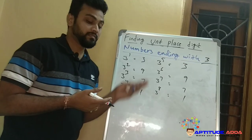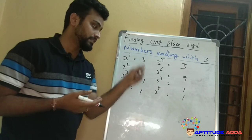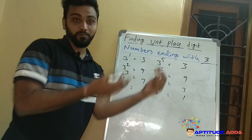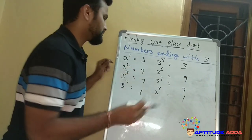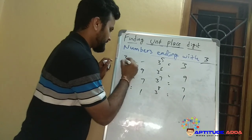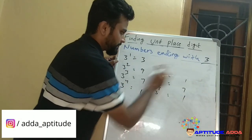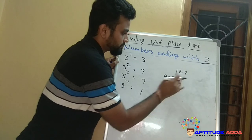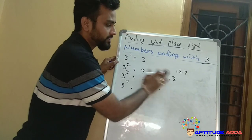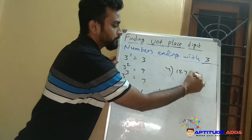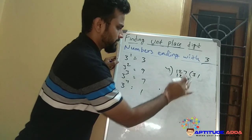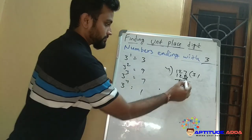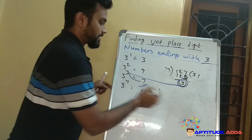Similarly, for numbers ending with 3, the units digit cycle is 3, 9, 7, 1 — repeating every four powers. So I divide the power by 4 and use the remainder. For example, 923^(41127): divide the power 41127 by 4 — 4 × 10281 = 41124, remainder 3. Since remainder is 3, the answer is the third in the cycle: 7.